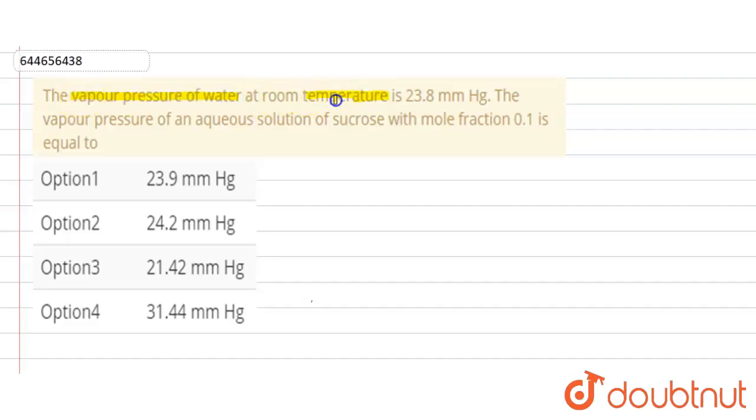of water at room temperature is 23.8 mm Hg. The vapor pressure of an aqueous solution of sucrose with mole fraction 0.1 is equal to what?